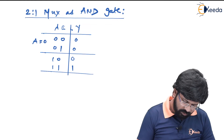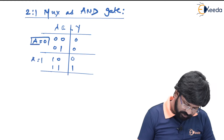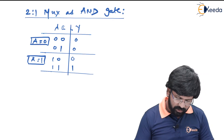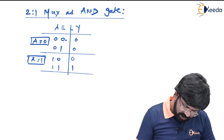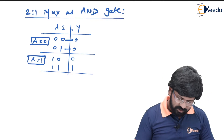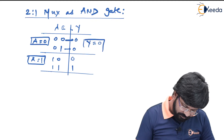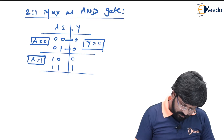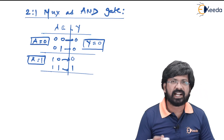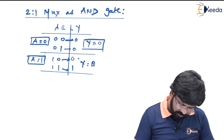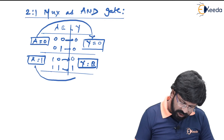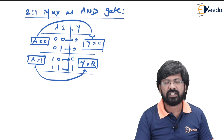For the first two combinations A equal to 0, and for the last two A is 1. For A equal to 0: when B is 0, Y is 0; when B is 1, Y is 0 — irrespective of B, Y is always 0. For A equal to 1: when B is equal to 0, Y equal to 0; when B equal to 1, Y is equal to 1 — so Y is exactly a copy of B, Y equal to B. So my ultimate aim: when A equal to 0, output becomes 0; when A equal to 1, I want to copy the status of B onto Y — this is AND gate.